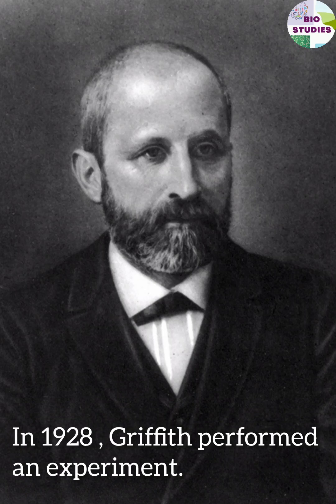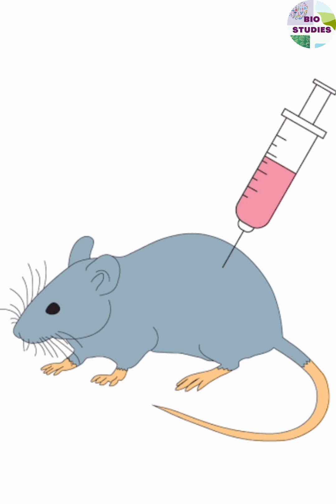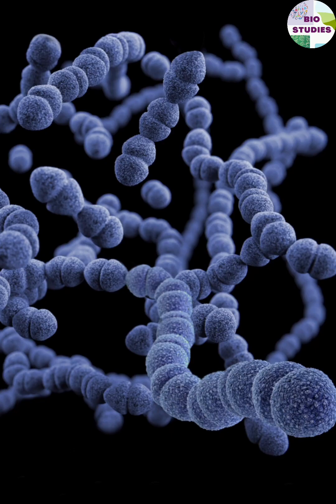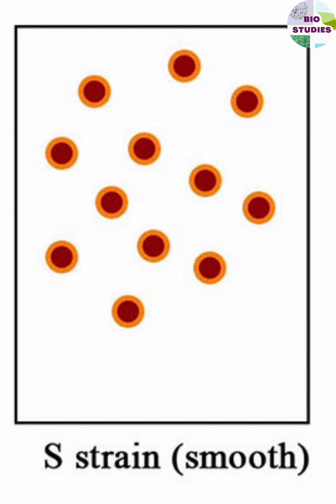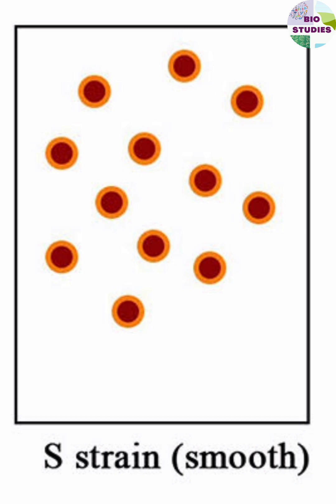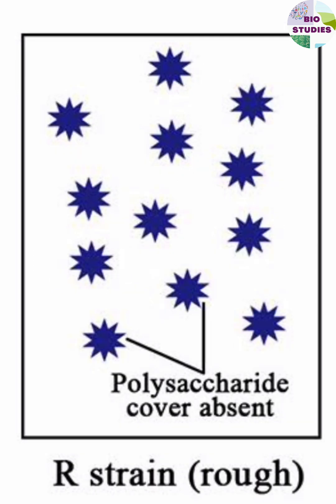Frederick Griffith performed an experiment by injecting bacteria into mice. The bacteria is Diplococcus pneumoniae, and there are two strains: smooth and rough. The smooth strain produces a capsule of polysaccharide, due to which it is virulent.